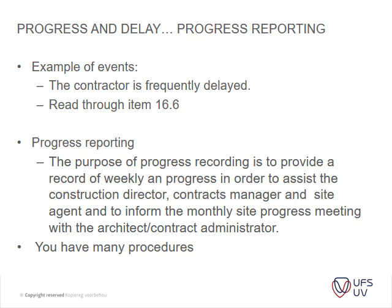Then your progress and delays, progress reporting, example of events — the contract is frequently delayed. You can go read through section 16.6, which is all about progress and delays. It's very important that you guys read through this, and I'll probably have a bit of an informal assessment on this. Please make sure you know what a contractor risk event is — for instance, delay by the subcontractor, weather delays, labour, and employer risk events such as variations, design changes, late possession, and other reasons. You must be able to discuss section 16.6.